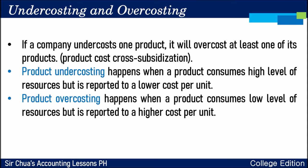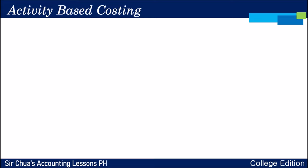What we want to avoid, as much as possible, is to cost our products in a more specific and precise manner. To avoid under-costing and over-costing, we can use what we call Activity-Based Costing. In Activity-Based Costing, you are costing your activities based on the activities themselves that are involved in the production process.